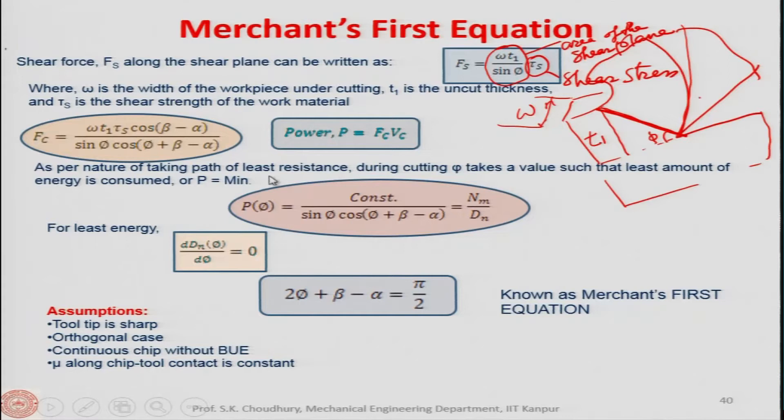As per nature's principle of least resistance, φ takes a value such that the least amount of energy is consumed — P is minimum. Just as dislocations in a lattice move to where resistance is least, during metal cutting the process itself adjusts the shear plane angle φ so that minimum power is consumed.